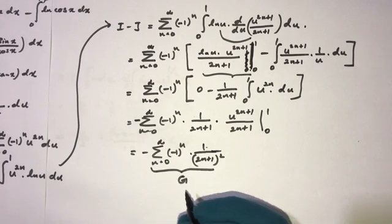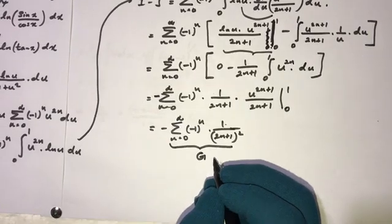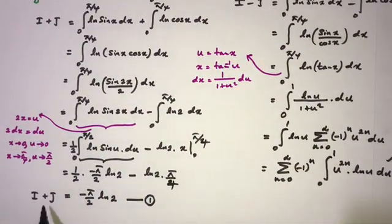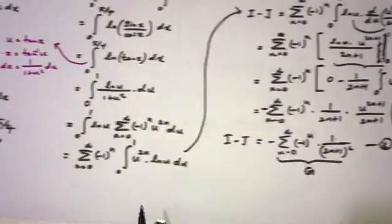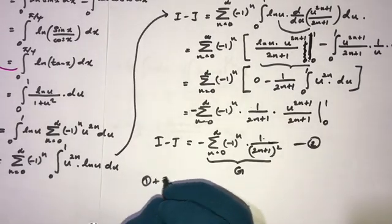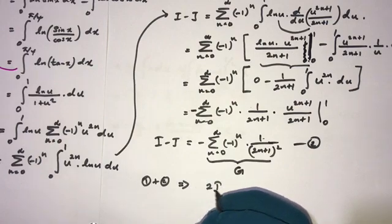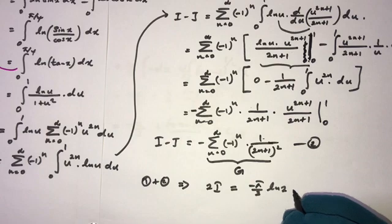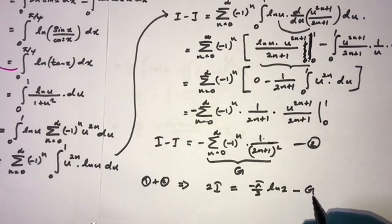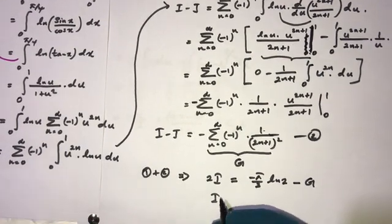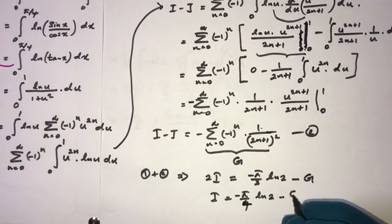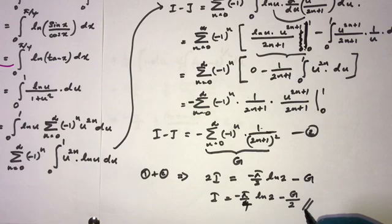This sum is the Catalan constant G. So I minus J = −G. This is equation 2. Adding equations 1 and 2: 2I = −π/2 · ln 2 − G. Therefore, the final answer is I = −π/4 · ln 2 − G/2. If you liked this video, please subscribe to the channel — thank you!